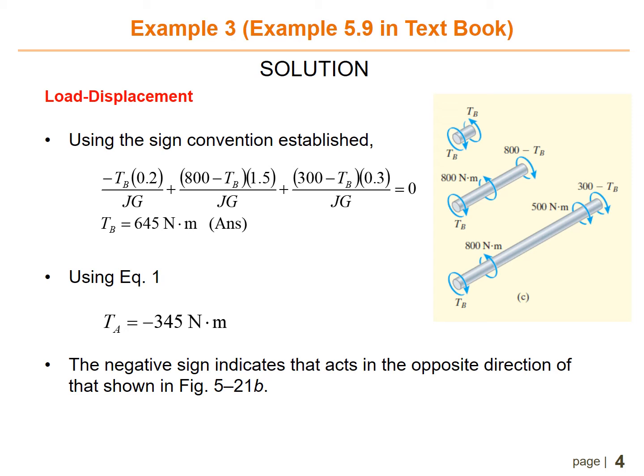For the load-displacement, using the sign convention established, the equation is: negative Tb times 0.2 divided by JG, plus (800 minus Tb) times 1.5 divided by JG, plus (300 minus Tb) times 0.3 divided by JG equals zero. Simplifying this gives Tb equals 645 newton-meter. Substituting back into equation one gives Ta equals negative 345 newton-meter.